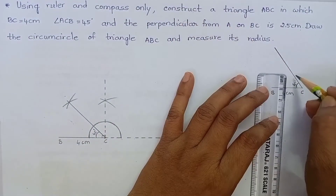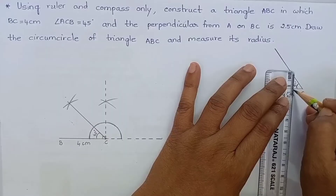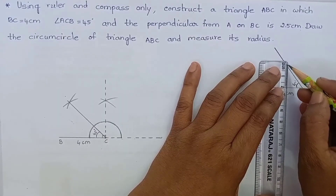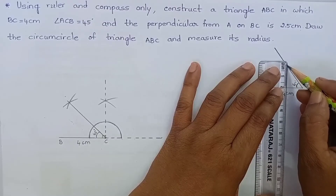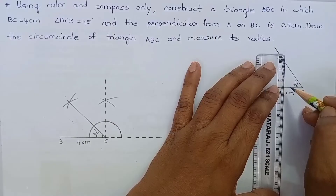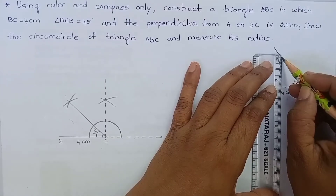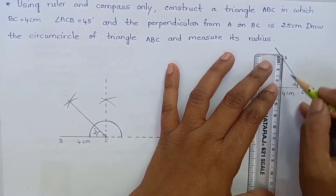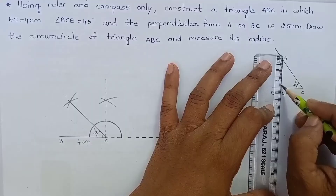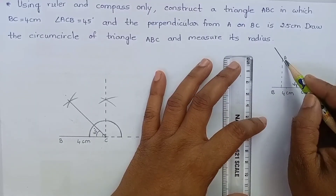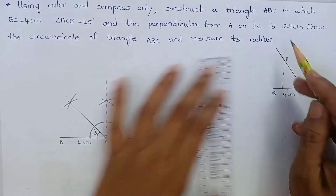See here. If I mark this point on this line, whether it measures 2.5 cm if I draw a perpendicular line — no. Suppose if I mark this point, then whether it measures 2.5 cm if I draw a perpendicular line on BC — no. Then if I mark this point as A, then it measures 2.5 cm. If I draw a perpendicular line on BC, then it measures 2.5 cm. That is the meaning of this question.